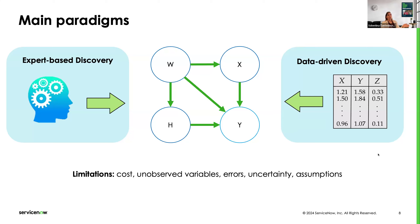Both approaches have limitations. The expert might be expensive to hire, or difficult to find if it's a new problem. They might also make mistakes and be very confident about them — we would only realize the errors after following their recommendations and finding the policy wasn't as effective as expected. Data-driven discovery algorithms also make mistakes, in particular when we don't observe all the variables, and in the best scenario, they don't always allow us to disambiguate all directions of causality. Sometimes there's uncertainty in their output.